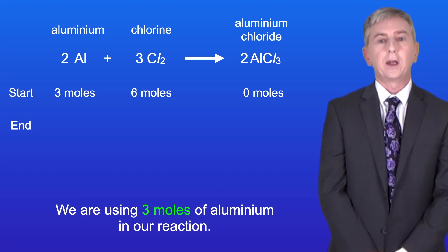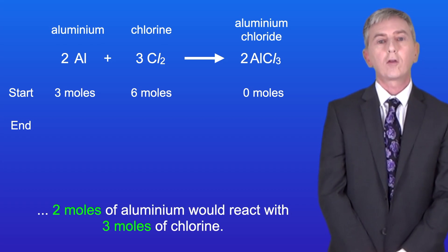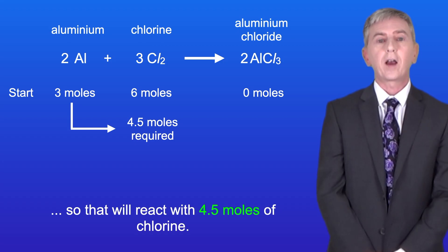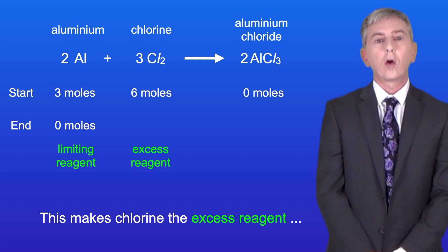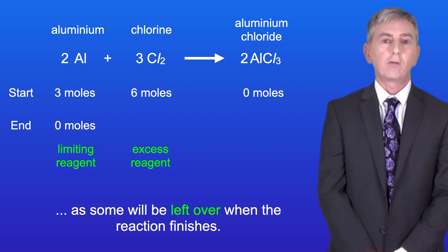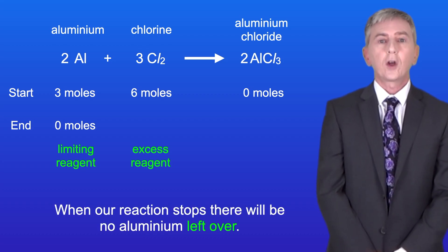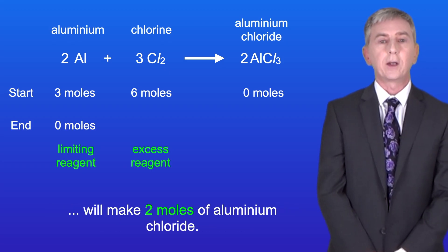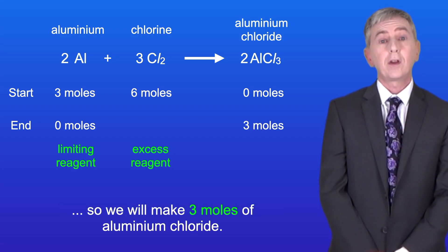We're using 3 moles of aluminium in our reaction. Looking at the chemical equation we can see that 2 moles of aluminium would react with 3 moles of chlorine. We have 3 moles of aluminium, so that will react with 4.5 moles of chlorine. We've got 6 moles of chlorine, so this makes chlorine the excess reagent as some will be left over when the reaction finishes. Aluminium is our limiting reagent as this will all react. Looking at the equation, 2 moles of aluminium make 2 moles of aluminium chloride, so 3 moles of aluminium reacting means we will make 3 moles of aluminium chloride.